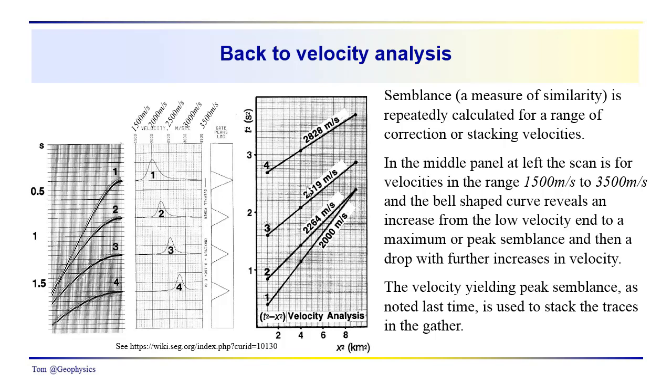The slope for the second one, 2264, 2519, and 2828, respectively, going one, two, three, four.